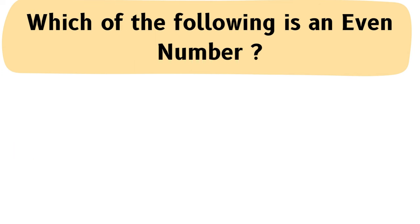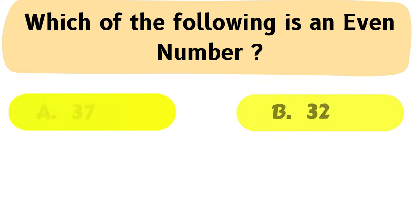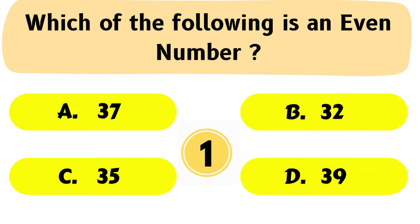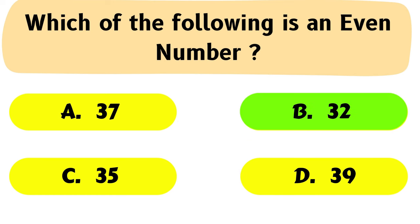Question No. 47: Which of the following is an even number? A. 37, B. 32, C. 35, D. 39. The correct answer is Option B: 32.